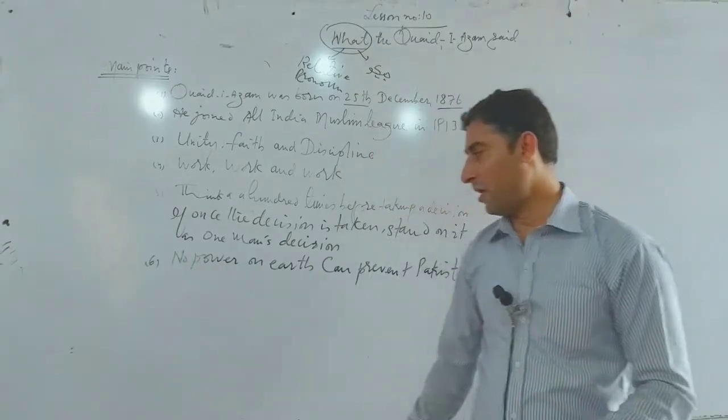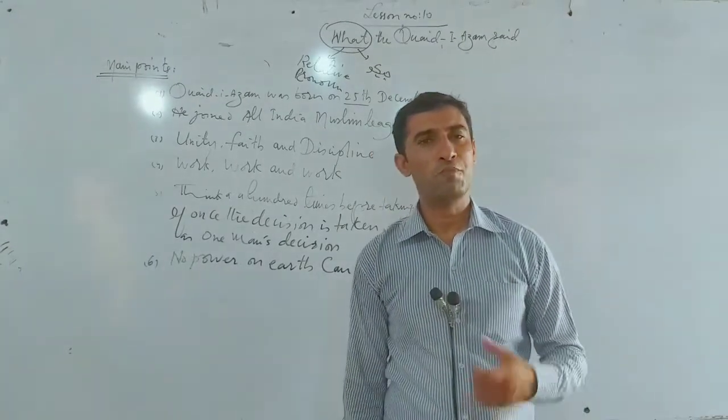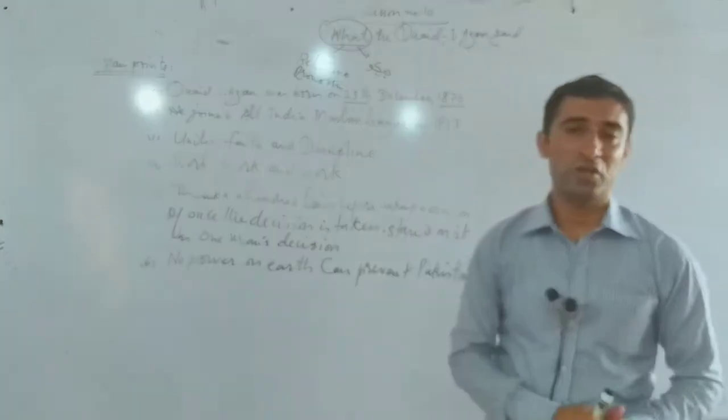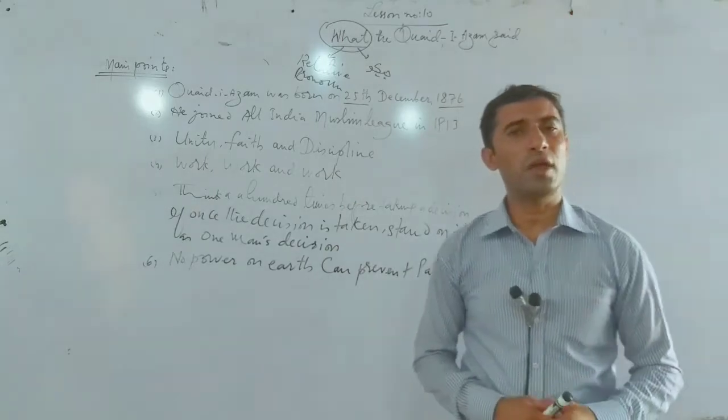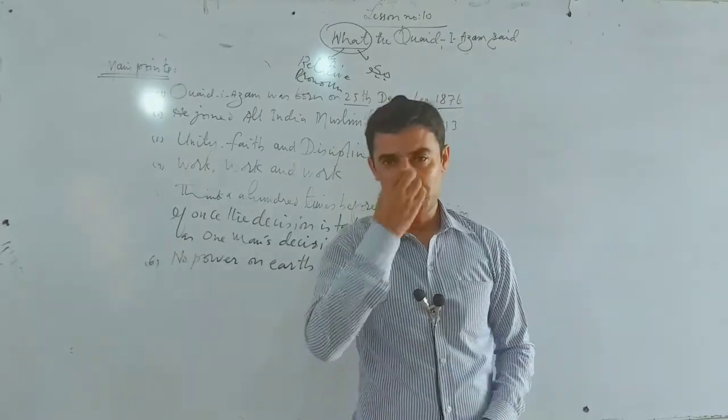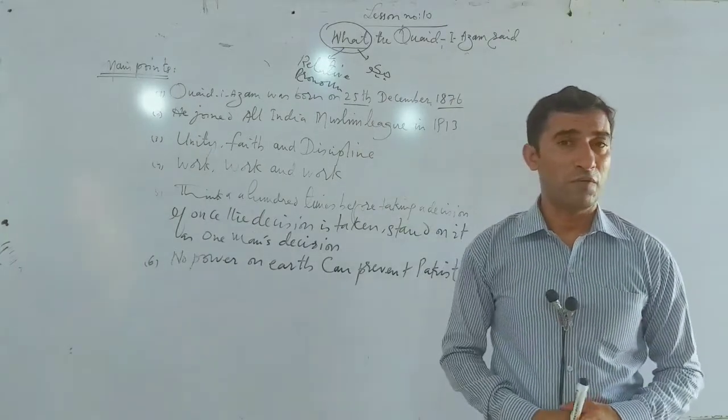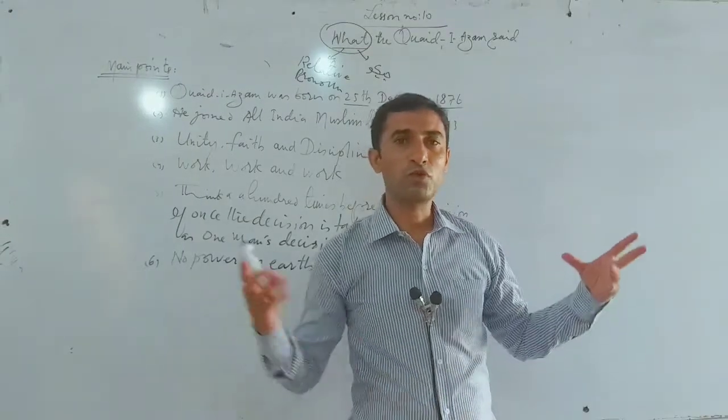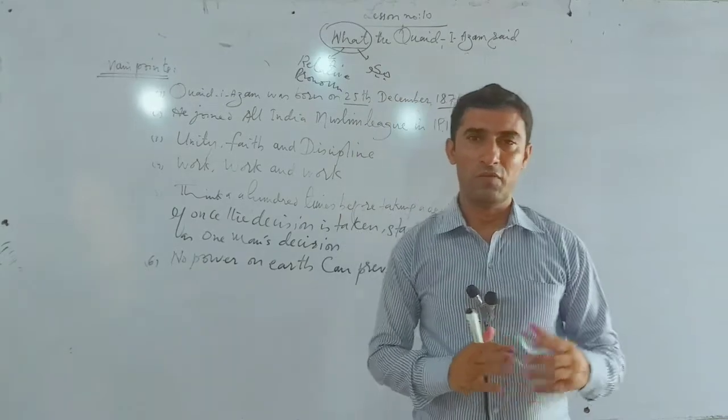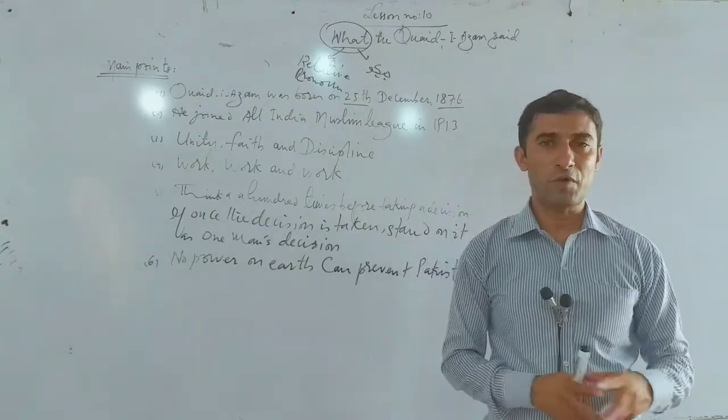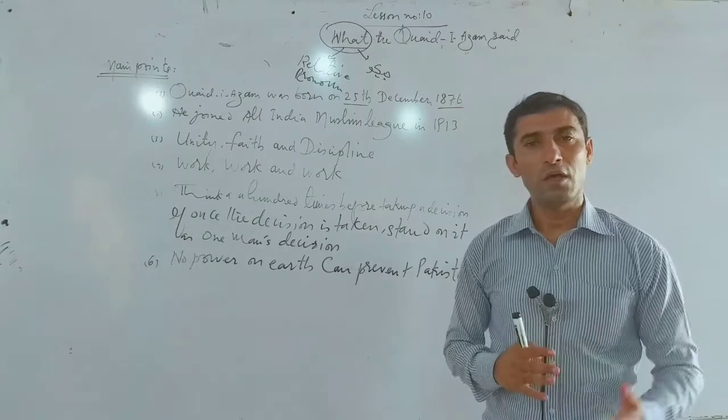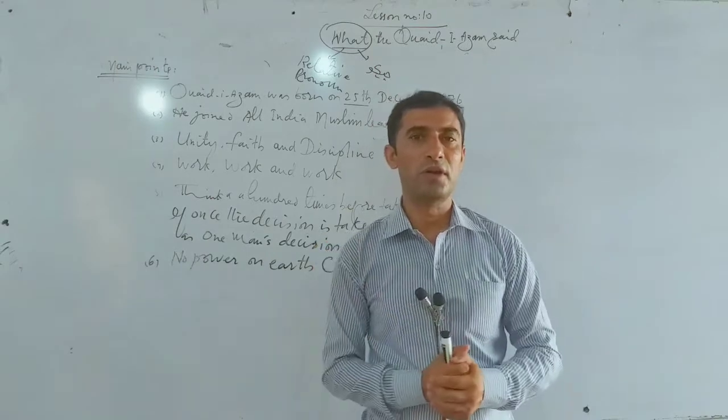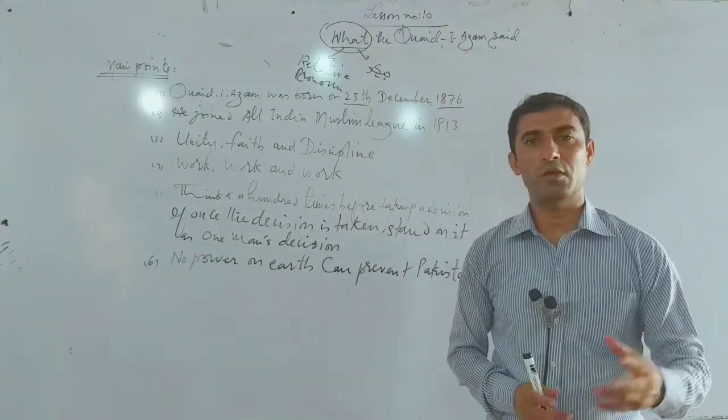And this is a very important point, number six. He said no power on earth can prevent Pakistan. So here you will find in this lesson the struggle for Pakistan and it's all about a brief introduction of Pakistan resolution, which was passed on 23rd March 1940 at Lahore in Minto Park. How Muslims struggled for their separate homeland, and what was the role of Quaid-e-Azam, all these important things we can find when we go through this lesson. But I am here going to tell you briefly, shortly, some important points which are very important.